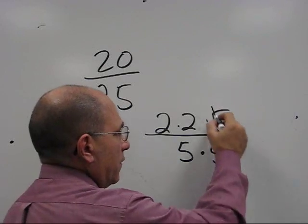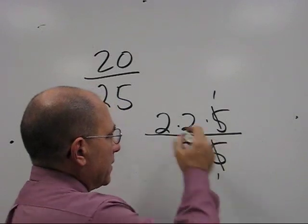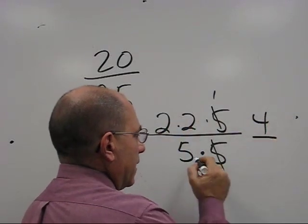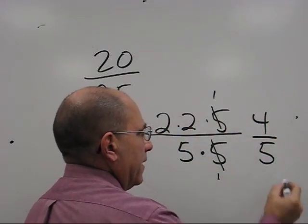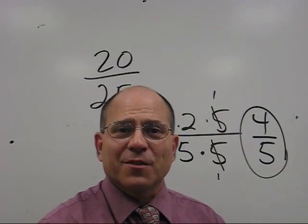And then we cancel 5s. Because they're divisible. They're the same. And then we say 2 times 2 is 4. And 5 times 1 is 5. And again. Now you know how to prime factor to reduce. Thank you.